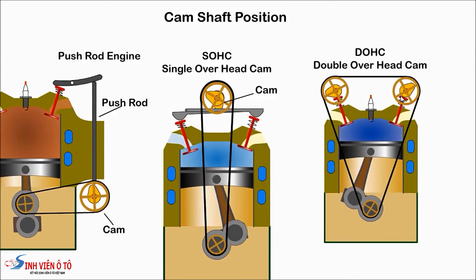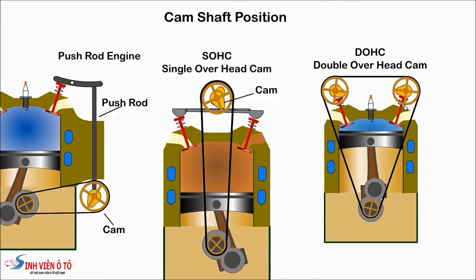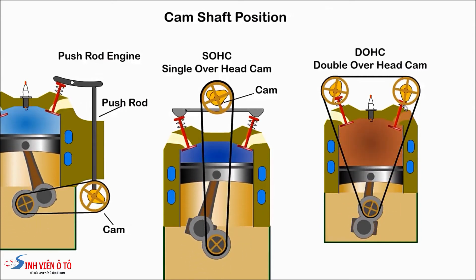With a non-interference engine, the valves do not extend into the path of the piston. If the timing belt breaks, it will not result in damaged valves.